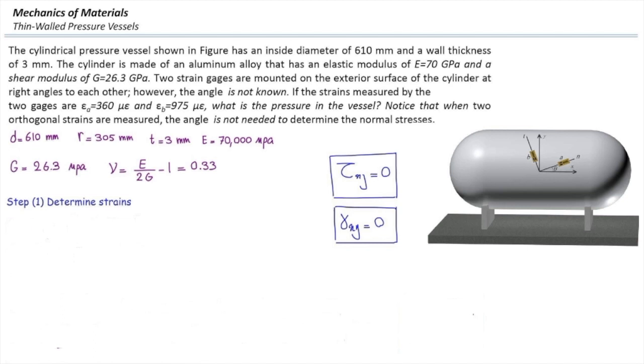I'm going to write down strains in the x and y directions. Epsilon x is the longitudinal strain. As the equation shown here, it's Pd over 4Te or Pr over 2Te multiplied by 1 minus 2 nu. I can plug in the values, everything is known but pressure, so that would be 247p. Similarly, we can determine strain in the y direction, which is hoop strain, and that would be 1213p. So we have determined internal strains in the x and y directions.